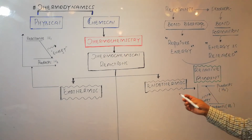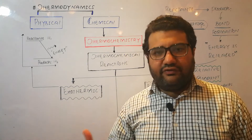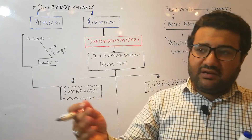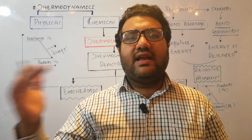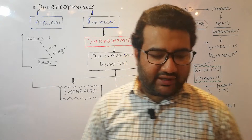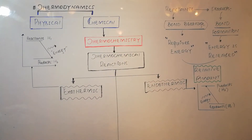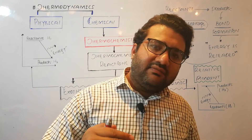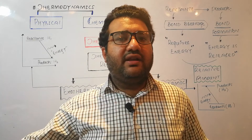In the case of an endothermic reaction, the direction of heat flow is from surroundings into the system, because more energy is taken from surroundings than is released. Conversely, if the bonds in the reactants are weaker and the bonds in the products are stronger, then lesser energy is required to break the weaker bonds, while more energy is released in forming the stronger bonds. So energy intake is lesser but energy given to the surroundings is more.